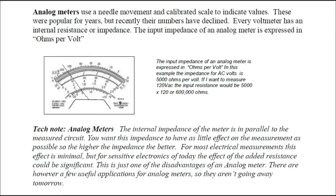Analog meters use a needle movement and calibrated scale to indicate values. These were popular for years, but recently their numbers have declined. Every voltmeter has an internal resistance or impedance. The input impedance of an analog meter is expressed in ohms per volt. Tech note: the internal impedance of the meter is in parallel to the measured circuit. You want this impedance to have as little effect on the measurement as possible, so the higher the impedance the better. For most electrical measurements this effect is minimal, but for sensitive electronics of today, the effect of the added resistance could be significant. This is just one of the disadvantages of an analog meter.